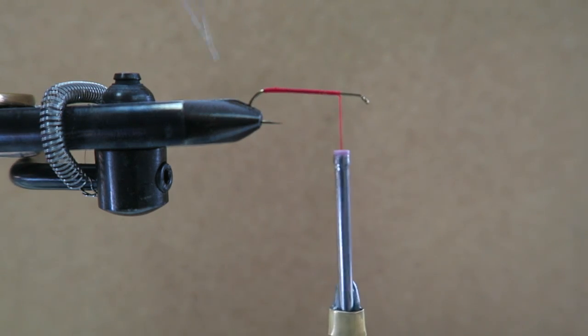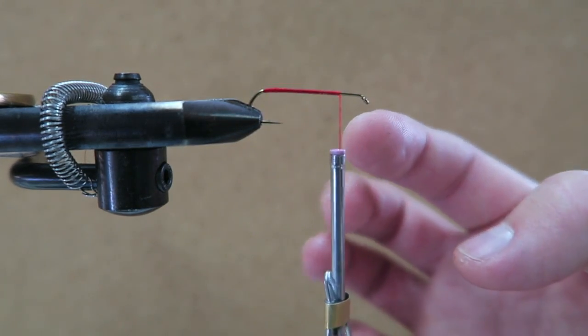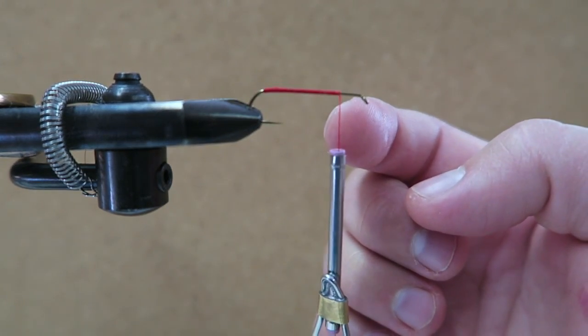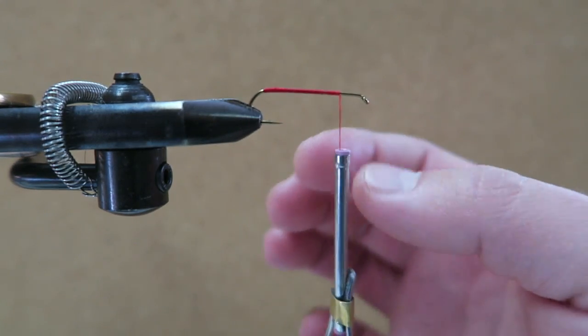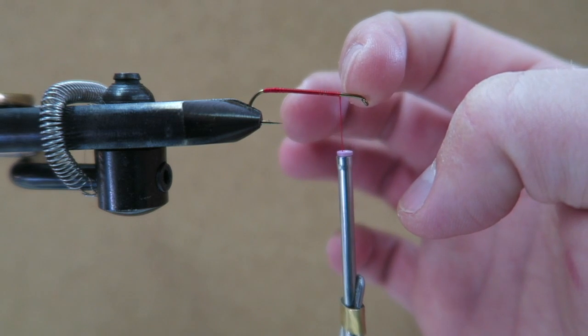For some reason my camera didn't record that when I did that, but anyway I'm back up to here. Usually the traditional way to do it is once you get here you tie off the red thread, and then the rest of this up here is all going to be black.